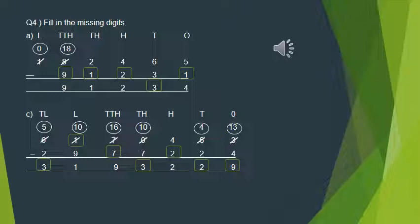The 10-lakh place borrowed from the crore place, so 1 becomes 0. We make it 10; 10 minus 9 is 1. Then the lakh place borrowed from the 10-lakh place, so 6 becomes 5; 5 minus 2 is 3. So here we have found out the missing digits of Part C.